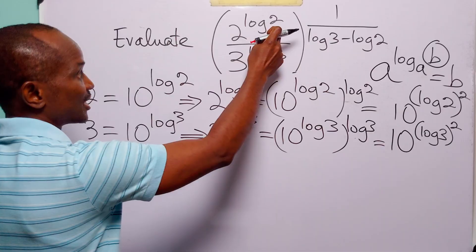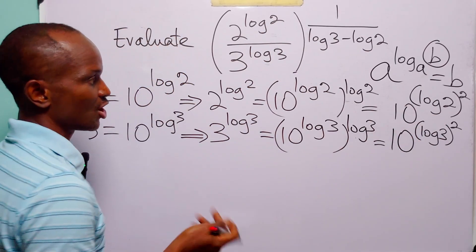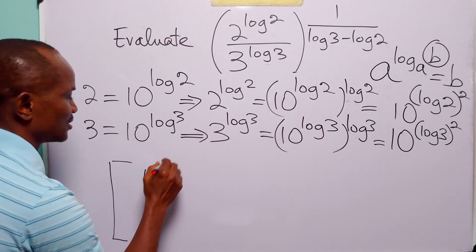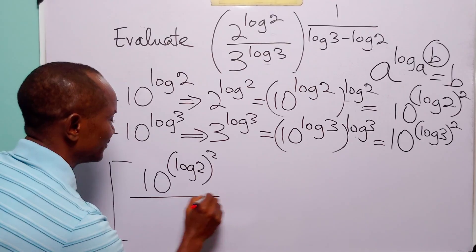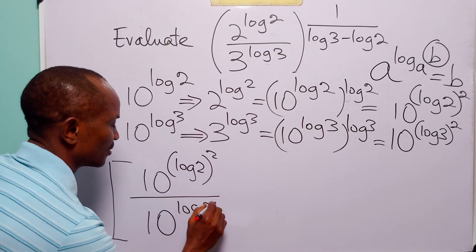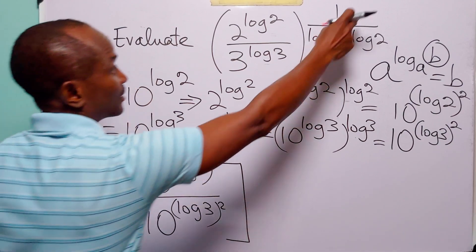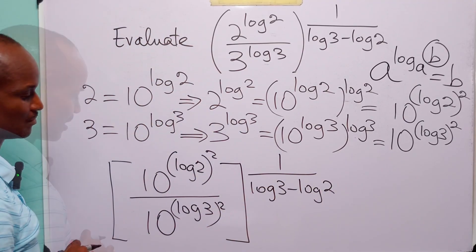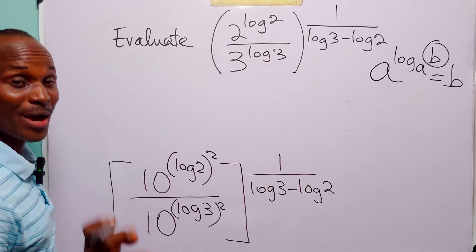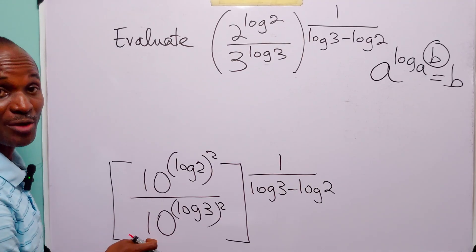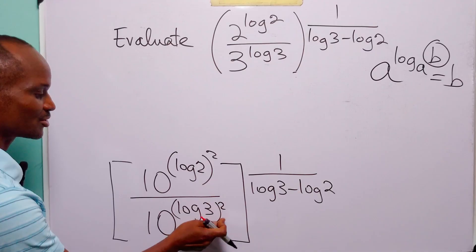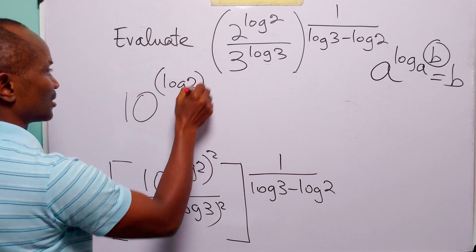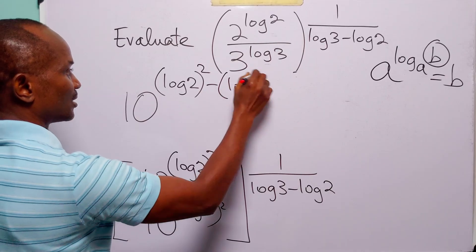The next thing we are going to do is replace the numerator and denominator with these two results. This expression becomes 10 to the power log²2 divided by 10 to the power log²3, all to the power 1 over (log 3 minus log 2). Since both numerator and denominator have the same base, we subtract the powers, giving 10 to the power (log²2 minus log²3).